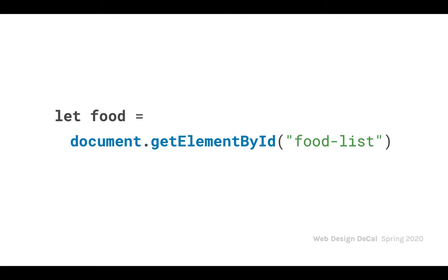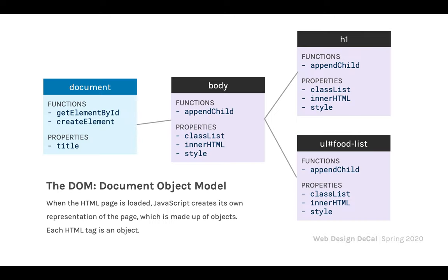Those are the two resources we wanted to mention. Now let's do a quick review of last week's material. You've probably seen this line many times: let food = document.getElementById('food-list'). Hopefully by now you know what getElementById means — it looks through our HTML DOM and finds an HTML tag with the ID 'food-list', then assigns that object to our variable. The DOM is something JavaScript creates when the HTML page is loaded, made of objects based on your HTML file.